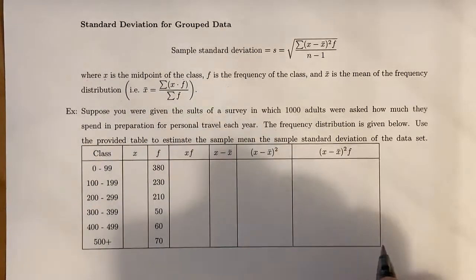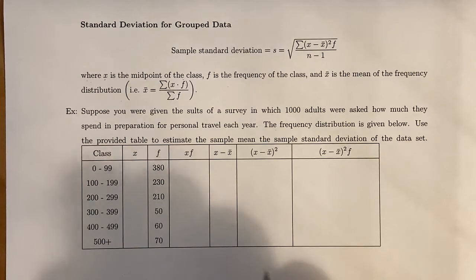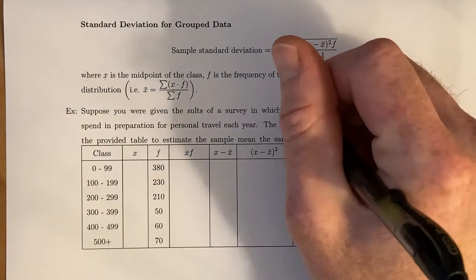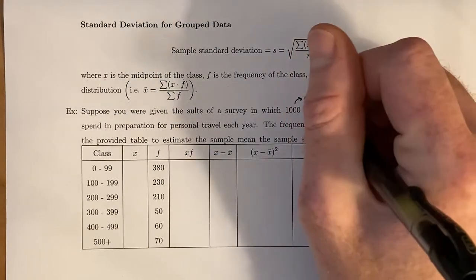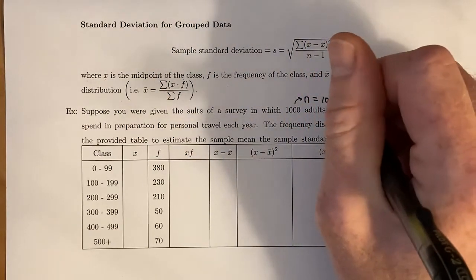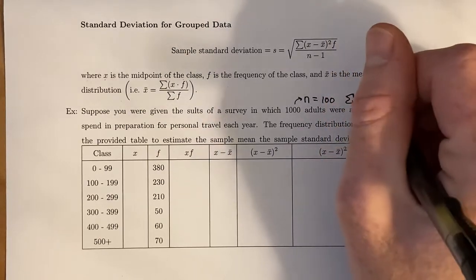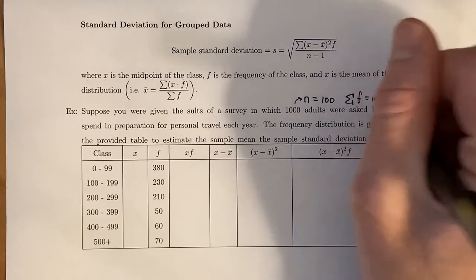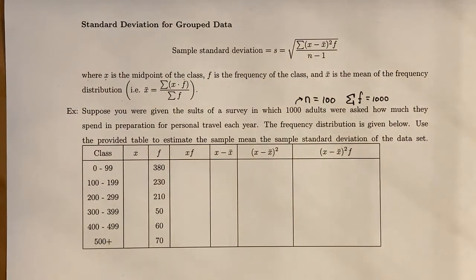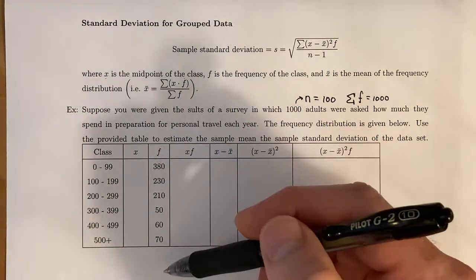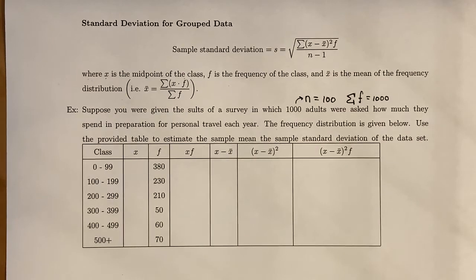Suppose you were given the results of a survey in which 1,000 adults were asked how much they spend in preparation for personal travel each year. Right away, this is our N. N equals 1,000, which means if we add up the frequencies, we end up getting 1,000. You can double check by taking those numbers and adding them up.